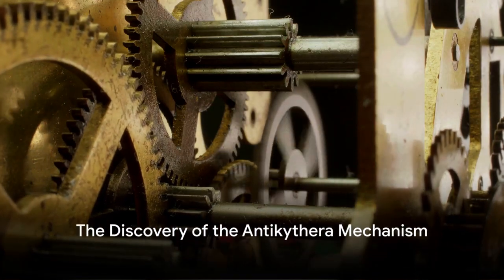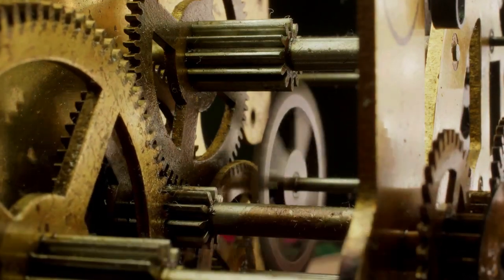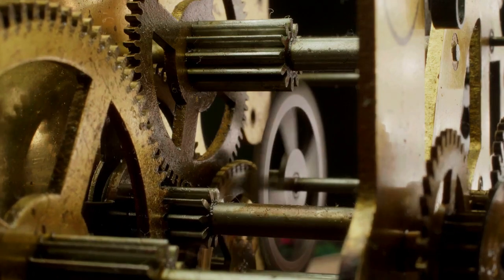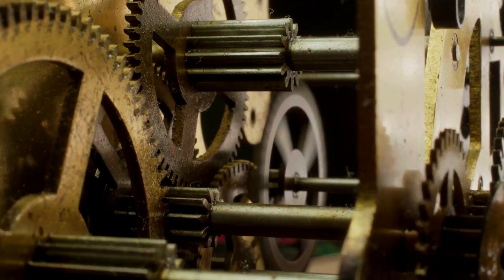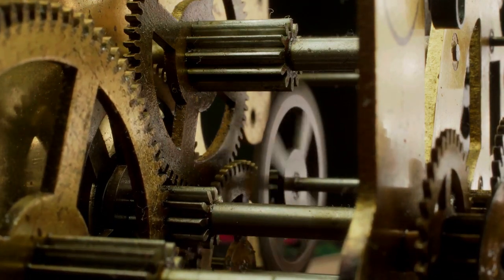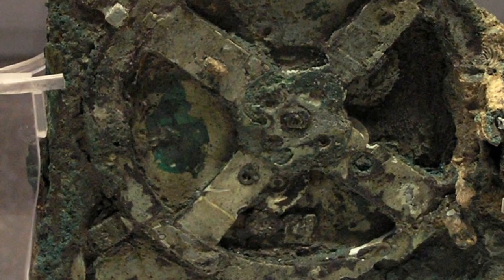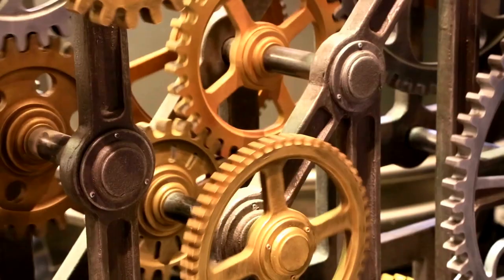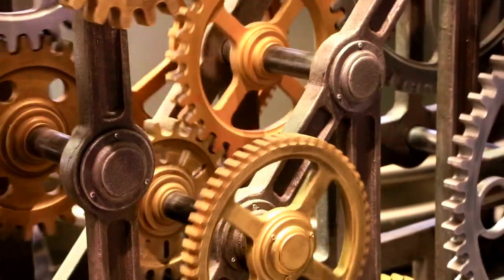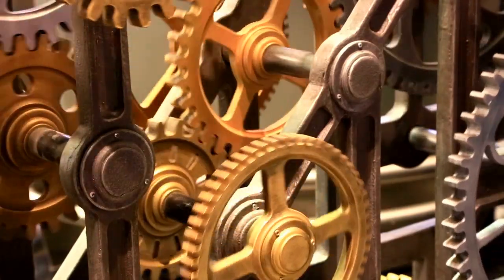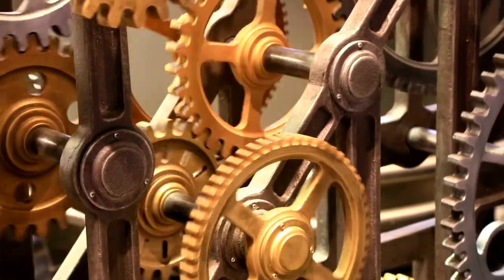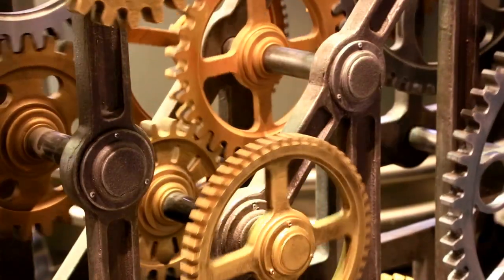Did you know that the world's first analog computer was not a product of the 20th century, but a marvel of the ancient world? A device so intricate it could predict lunar and solar eclipses, track celestial bodies, and even mark the Olympic Games. This is the Antikythera mechanism, a masterpiece of Hellenistic technology that has puzzled historians and archaeologists alike.